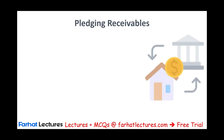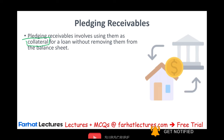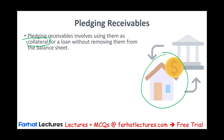Another way to raise money through accounts receivable is pledging. Rather than selling it, you can pledge it. Pledging a receivable is basically using this asset as collateral for a loan. What is collateral? Collateral is when you promise someone else something in case you do not pay. For example, when you want to buy a car, you may use your car as collateral for a loan. Or if you want to buy a house, you put your house as collateral - if you don't pay your mortgage, the bank will take the house. In this example, the receivable itself is the collateral.